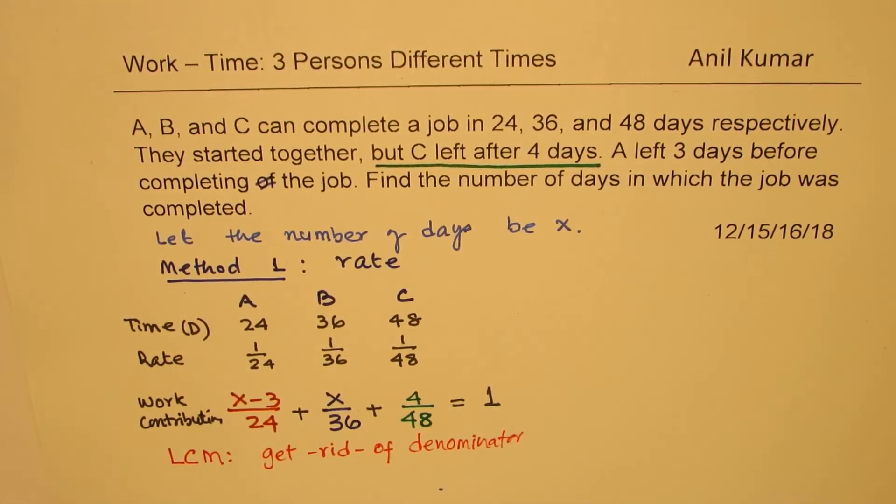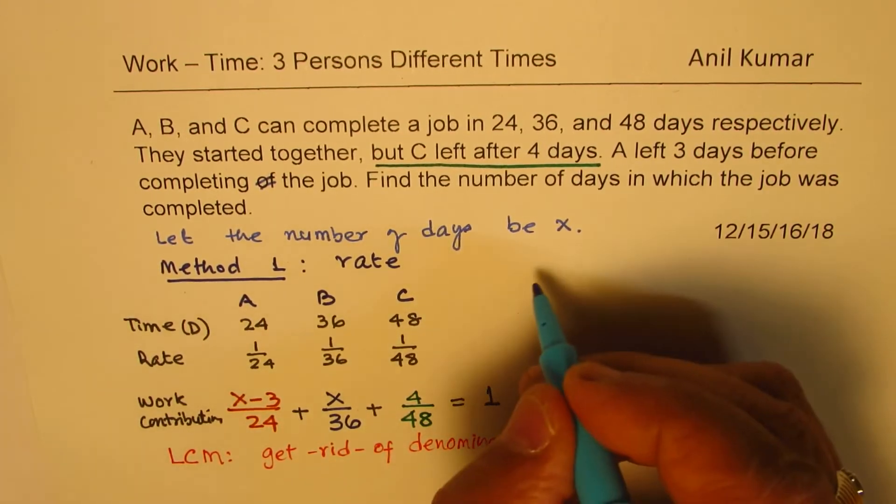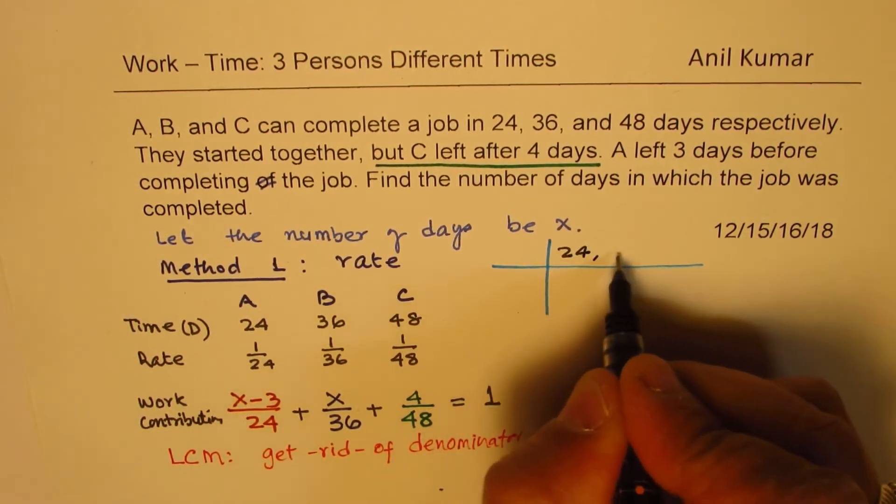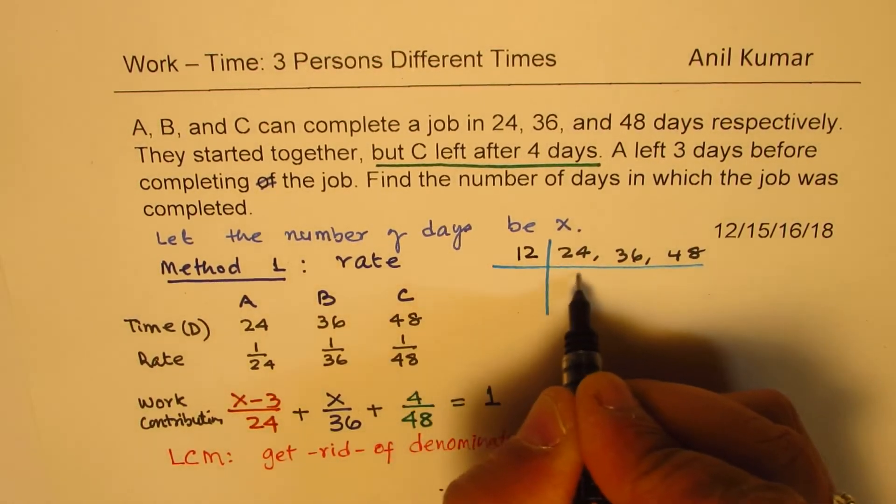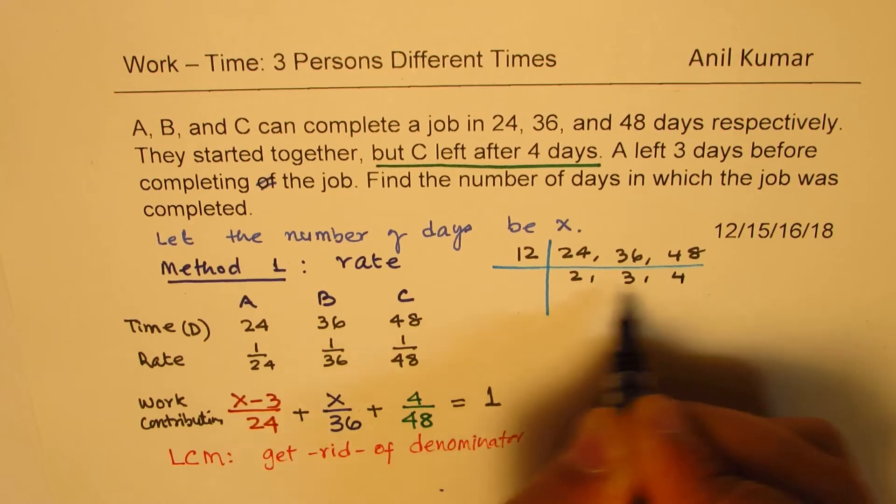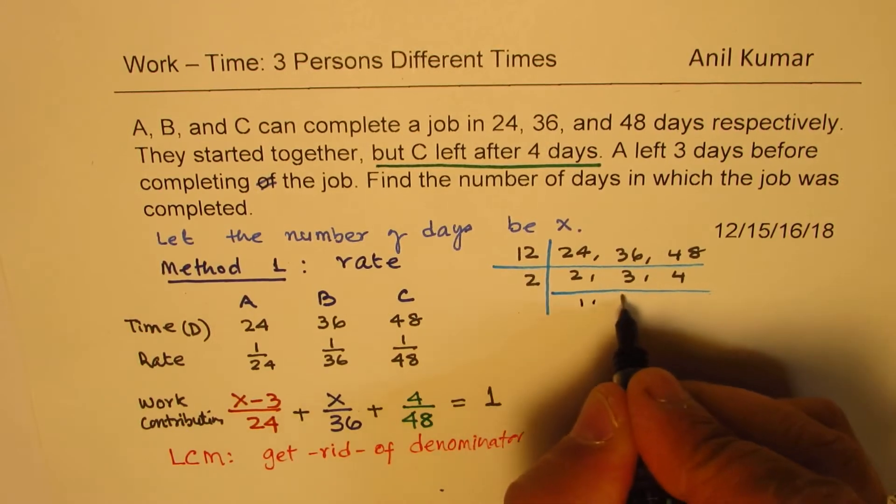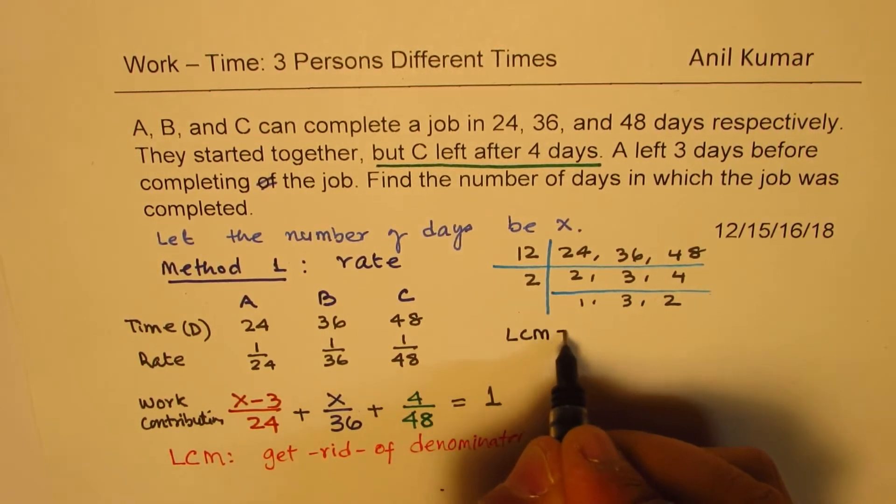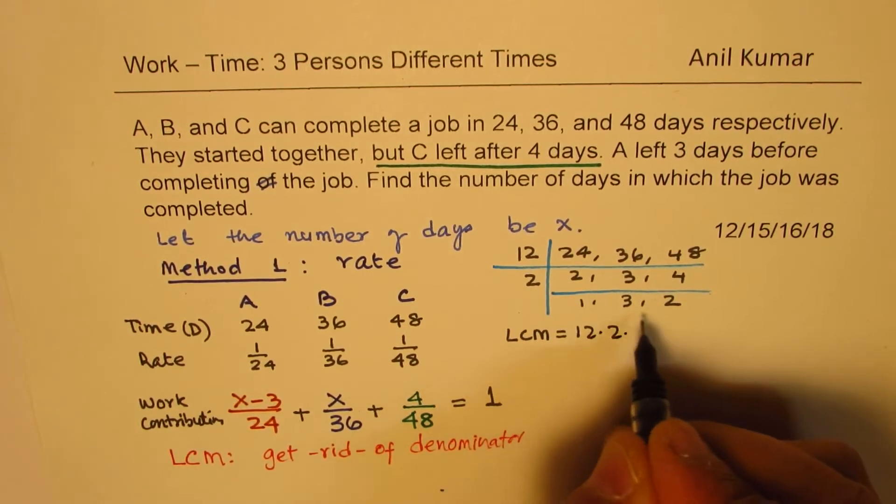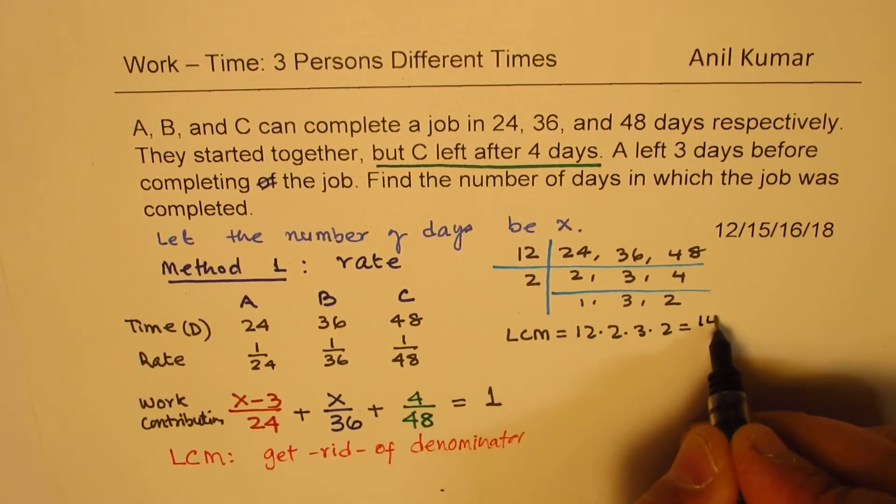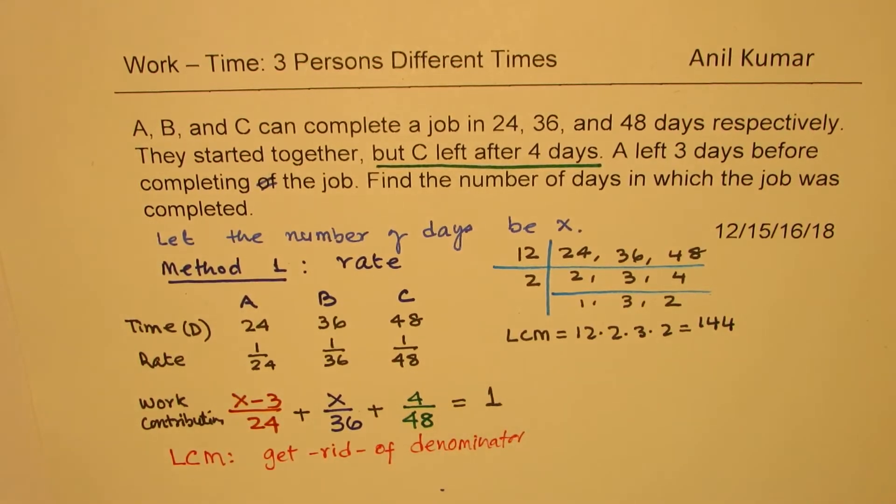How do we find the LCM? This is next critical step. We are working on these numbers, which are 24, 36, and 48. Well, 12 can divide into them. And now two is a common factor. So we can further take out two, which is common. So we get our LCM as equal to 12 times 2 times 3 times 2. 2 times 3 is 6 times 2 is 12. 12 times 12 is 144. So we get our LCM, which is 144.